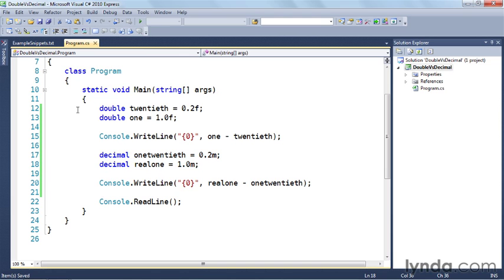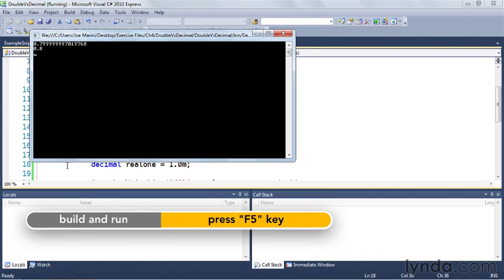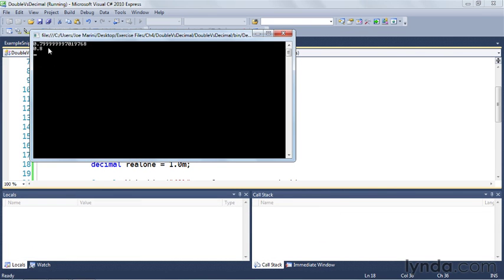The only thing that's different is in one case, they're doubles. In one case, they are decimals. So let's save this and let's run it. And you can see that in the first case, the 1.0 minus 0.2 when using a double results in 0.799999999, whatever, a whole bunch of high precision numbers here.